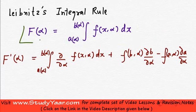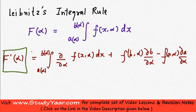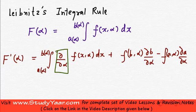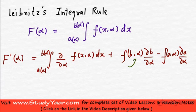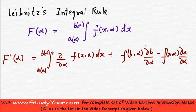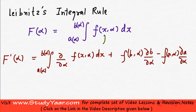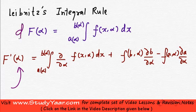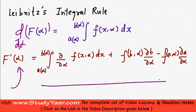So if this is a function of alpha, then the derivative f'(alpha) is given by: integral from a(alpha) to b(alpha) of the partial derivative of f(x, alpha) with respect to alpha dx, plus f(b, alpha) times the partial derivative of b with respect to alpha, minus f(a, alpha) times the partial derivative of a with respect to alpha.